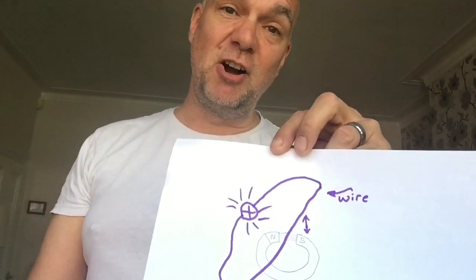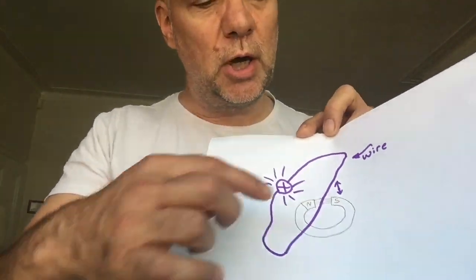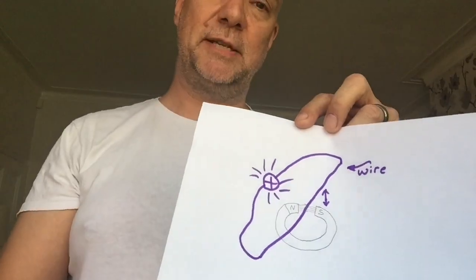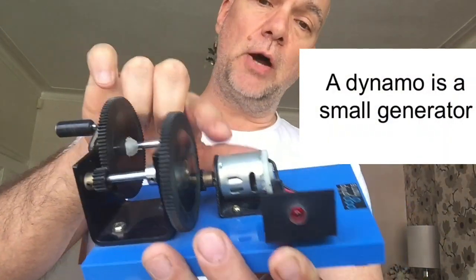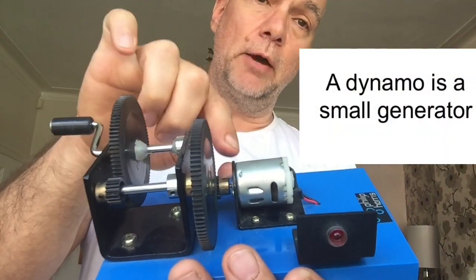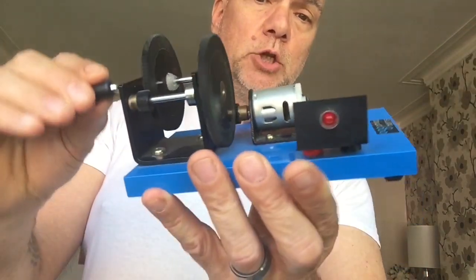This example I've drawn probably wouldn't work because there's only one strand of wire passing through that magnet, which wouldn't really generate that much electricity. However, what I've got here is a little dynamo inside there, and what you've got is lots and lots of strands of wire all coiled together.